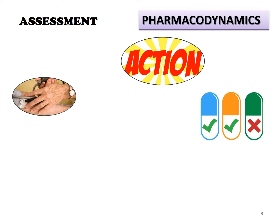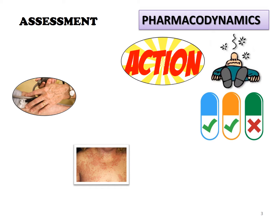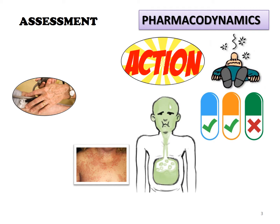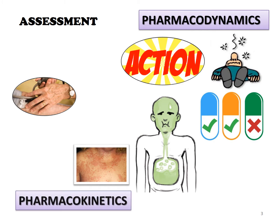The patient is then assessed for allergies, the ability to tolerate the medication, and the presence of physiological changes such as vomiting, diarrhea or kidney disease, as these impact pharmacokinetics.